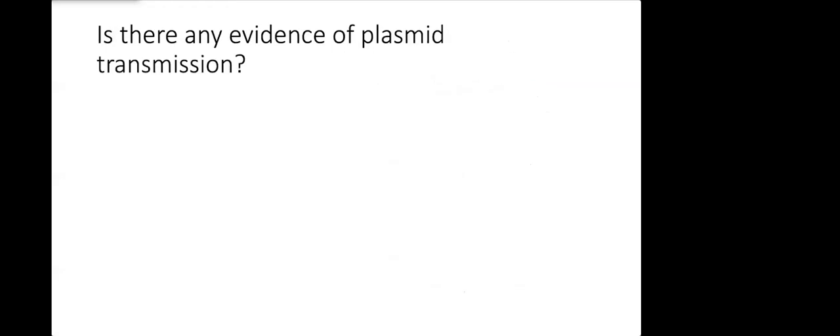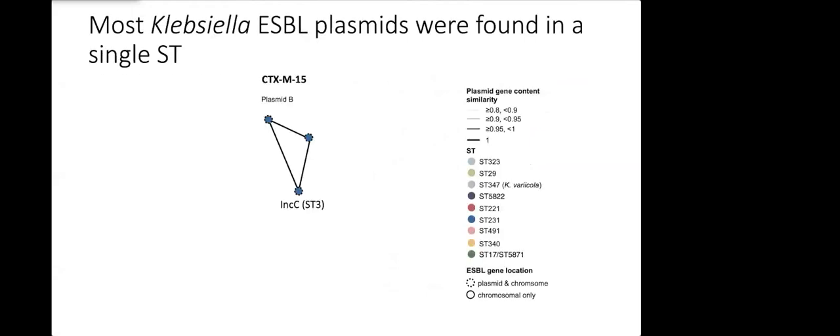Then we wanted to understand if there was any evidence of plasmid transmission. To do this we took our scores and we used them to make a network. What we found when we made this network is that most plasmids were in a single sequence type. Here I have an example of a CTX-M-15 plasmid, plasmid B.